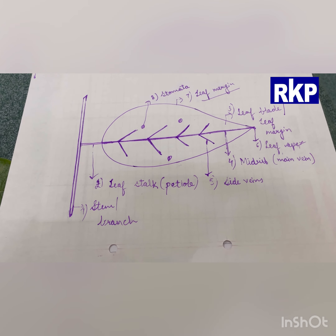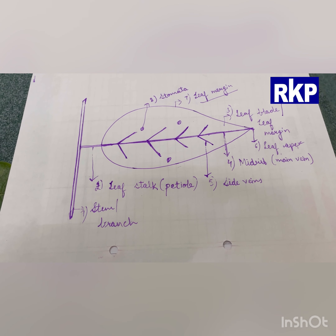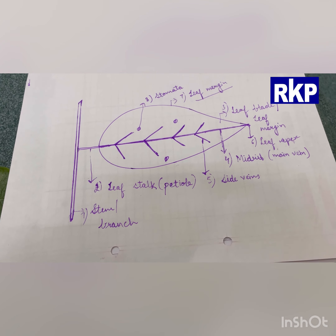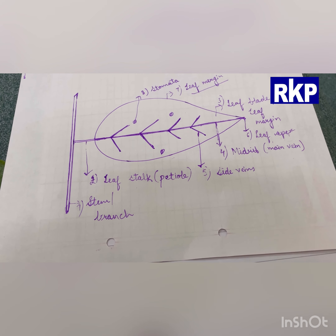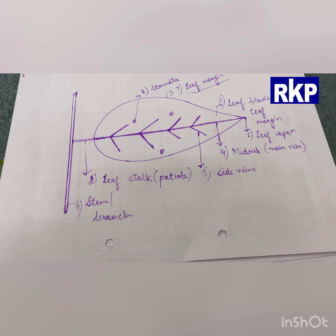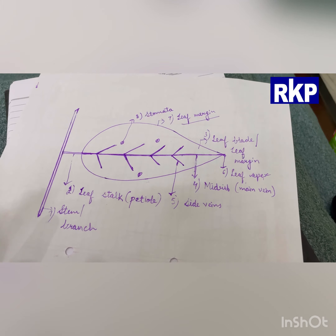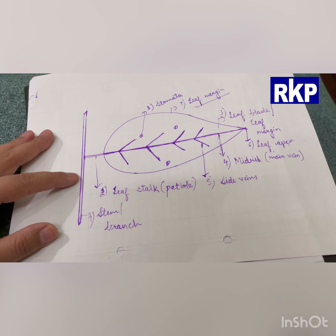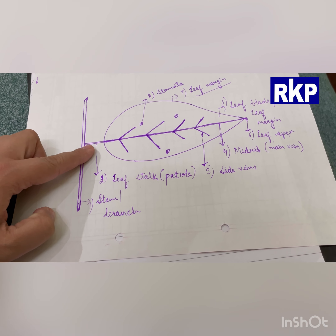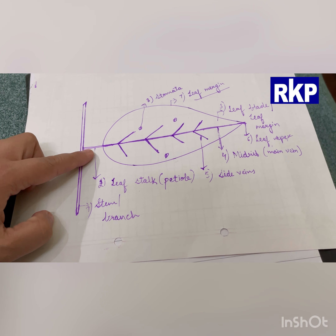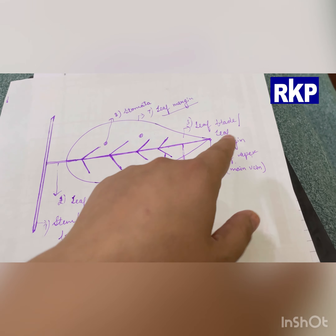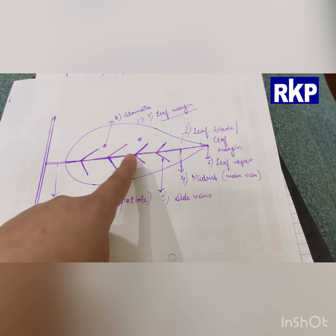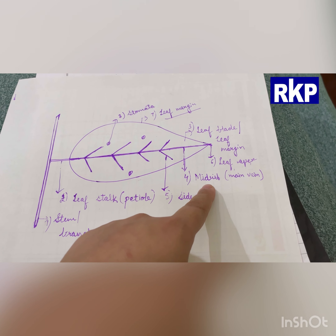This is the part from where the leaf grows, either on the stem or on the branch. The part by which the leaf is attached to the stem or branch is the leaf stalk or petiole. The full flat surface of the leaf is the leaf blade. The tip of the leaf is the leaf apex. The pipeline structure running through the middle of the leaf is the midrib or main vein.